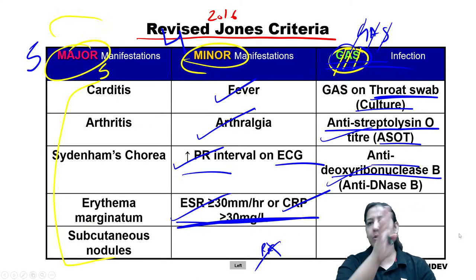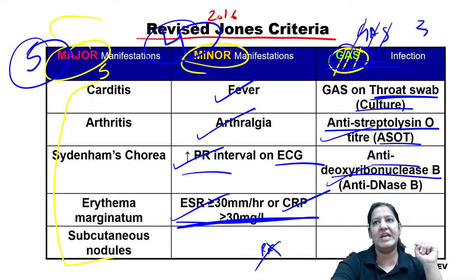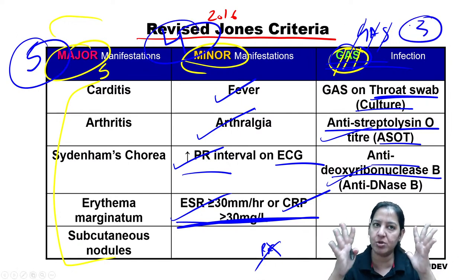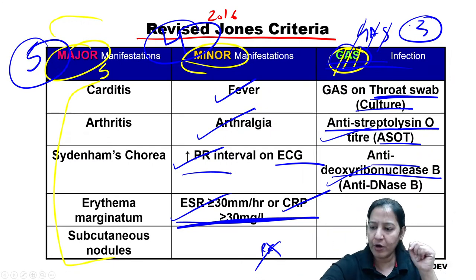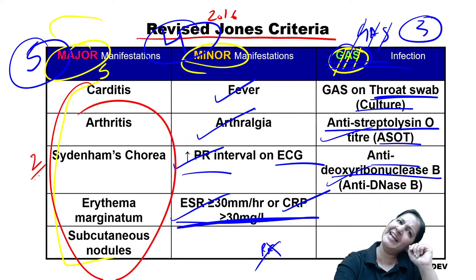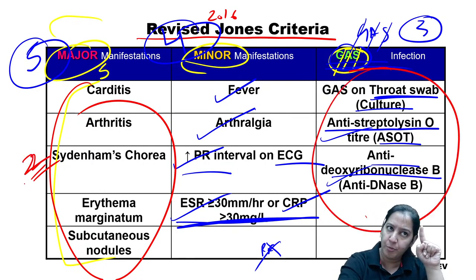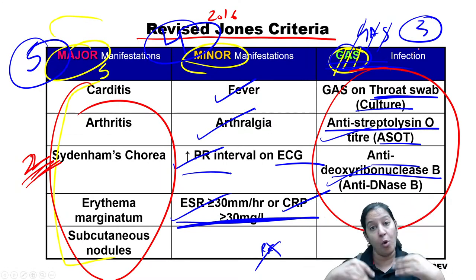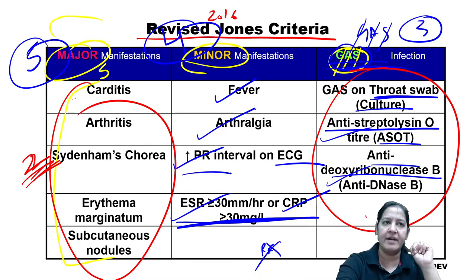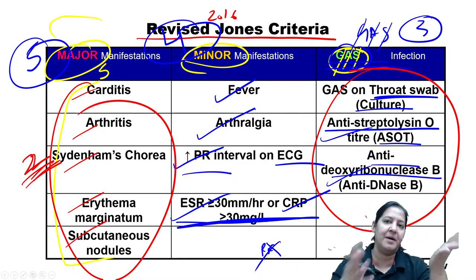These are the revised Jones criteria. The diagnosis requires: either two major criteria (minimum) along with GAS criteria, or one major and at least two minor criteria along with GAS criteria. GAS criteria must always be present to label a patient as having rheumatic fever.